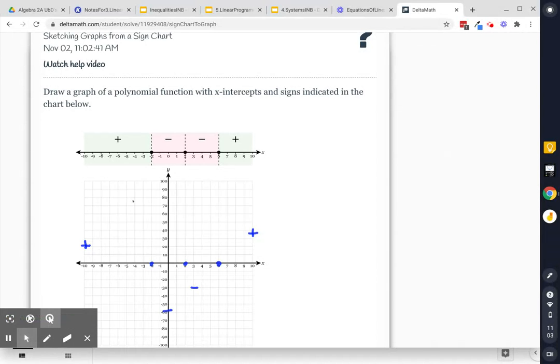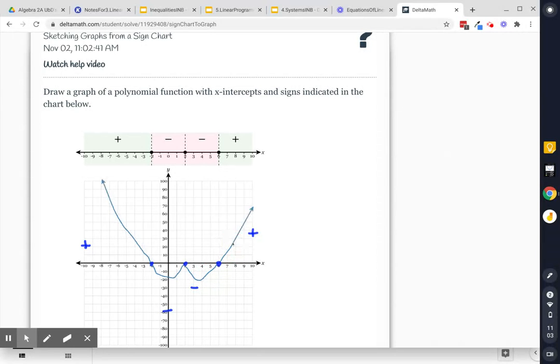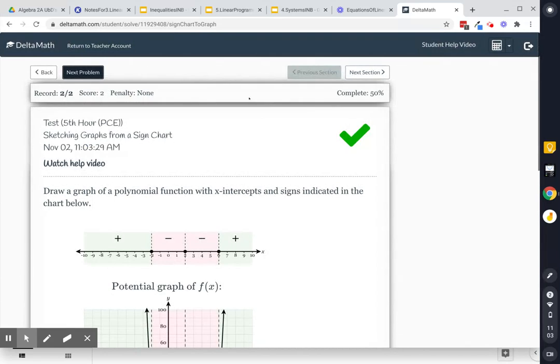So if I click and drag, I start positive. Hit here. I am going under. I am supposed to stay negative, so I don't want to cross over, but then when I get to six, then I get to go back up into positive. Submit my answer. Fabulous.